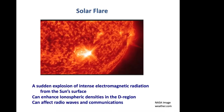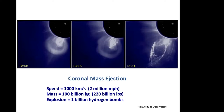A solar flare is a sudden explosion of intense electromagnetic radiation from the sun's surface. Solar flares can produce enhanced densities in the ionospheric D region and interfere with radio frequency communications and pipeline transmissions on Earth. A coronal mass ejection is a major explosion in the upper atmosphere of the sun. During a CME, speeds can approach 2 million miles per hour, the mass can be 220 billion pounds, and the explosion power is equivalent to 1 billion hydrogen bombs. When a CME is pointed at Earth and hits, it will have a major effect on ionosphere-thermosphere weather.